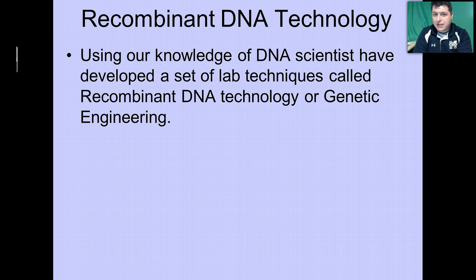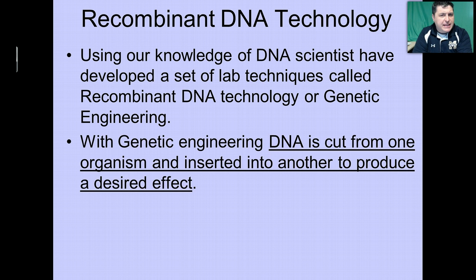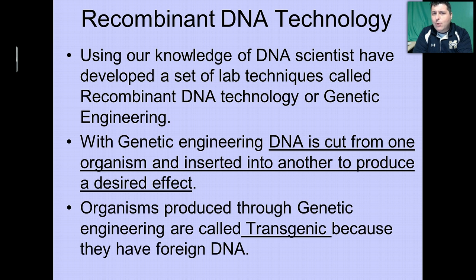Using our knowledge of DNA, scientists have developed a set of techniques called recombinant DNA technology or genetic engineering. With genetic engineering, DNA is cut from one organism and inserted into another to produce a desired effect. Organisms produced through genetic engineering are called transgenic because they have foreign DNA — 'trans' refers to movement of genes, so we've moved the genes from one organism to another.